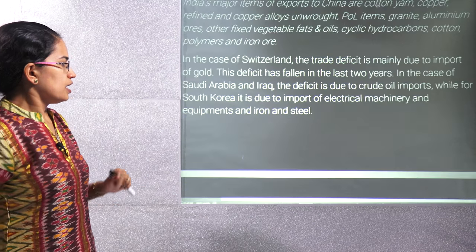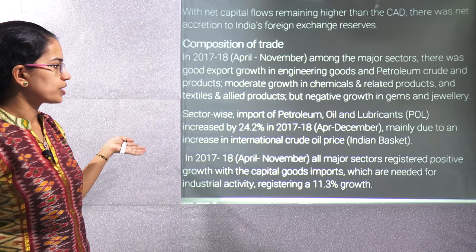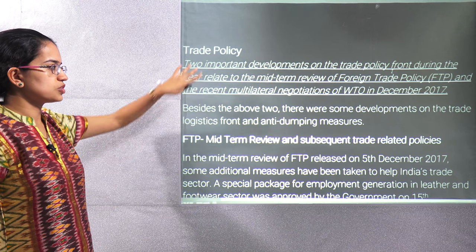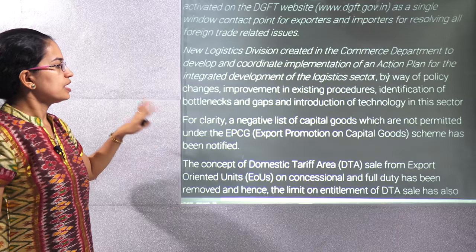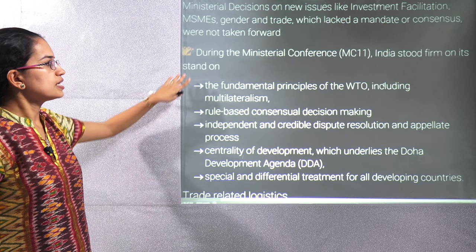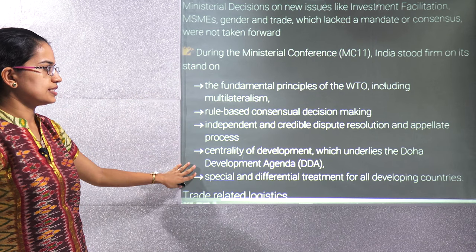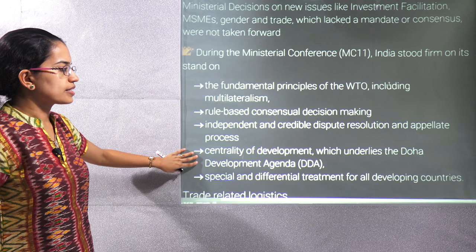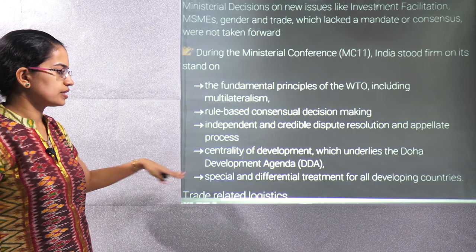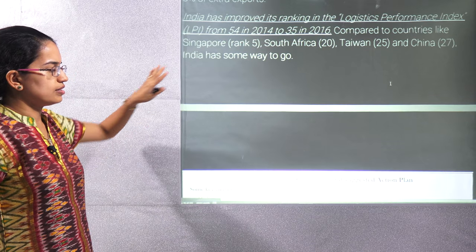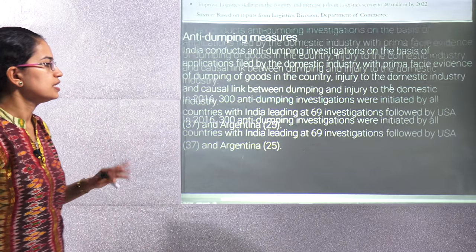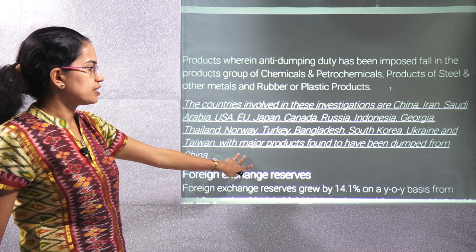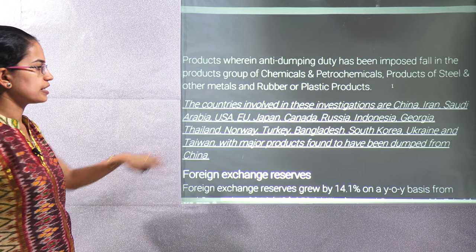The external sector chapter mainly focuses on statistics for trade. We have talked about multilateral negotiations on WTO and the midterm review of the Foreign Trade Policy. India worked on the principles of WTO multilateralism and the Doha Development Agenda. The Logistics Performance Index and India's road density are very important. Various countries are involved in anti-dumping investigations for major products dumped from China.